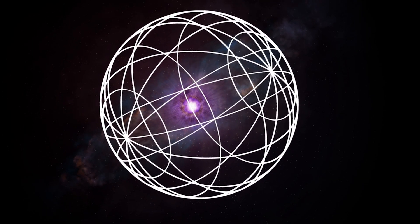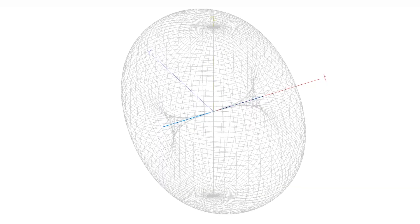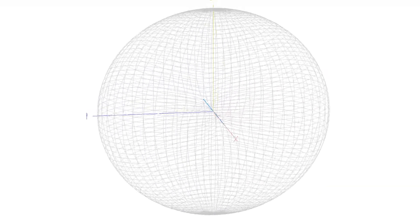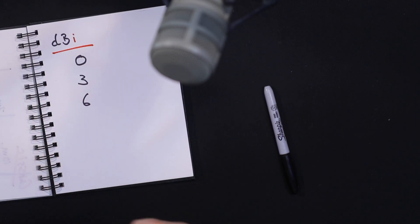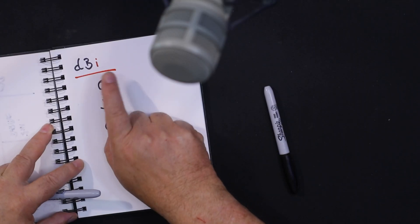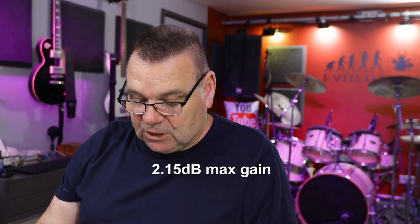We use the isotropic radiator as an imaginary reference to compare against, say, a dipole — a wire where most of the RF is radiated perpendicular to the wire. We use the term dBi when referencing one antenna against another. A dipole in free space, at the maximum point of its donut-shaped radiation pattern, has a gain over an isotropic radiator of around 2 dBi.